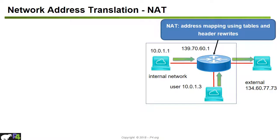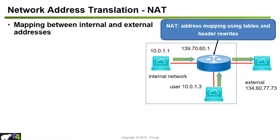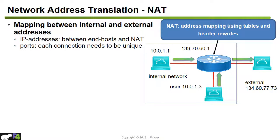Another data plane operation is network address translation, also called NAT. A NAT maps between internal and external network addresses. In an example where the external address is 134.60.70.73 and the internal network has multiple IP addresses with a different prefix, the NAT device maps between the IP addresses of end hosts and the NAT. Because each connection must be unique, port information is used to identify each connection. A NAT table is used to do the mapping, and NAT table entries are dynamically created when new flows are detected.